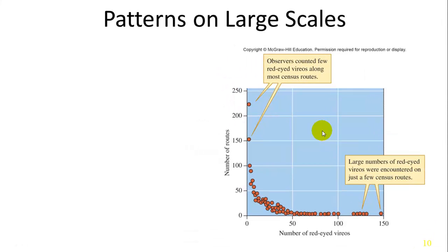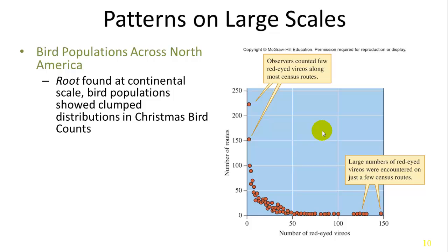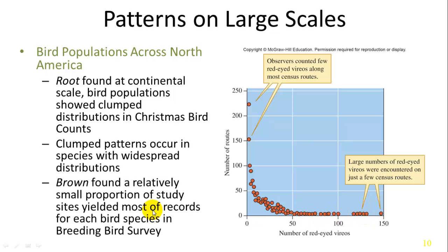There are distribution patterns at large scales as well. Root found at the continental scale, using bird survey data, that bird populations across North America are not evenly distributed — most birds are clumped in certain areas and absent elsewhere. The Christmas Bird Count, conducted annually by amateur birders across different routes, provided this data. Analysis showed individuals were found in low numbers on many routes and in high numbers on very few routes, a pattern consistent across species.